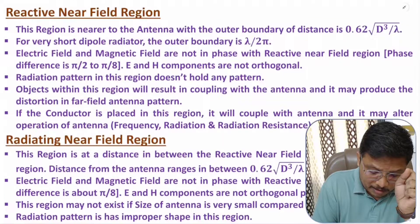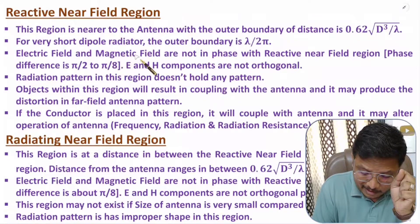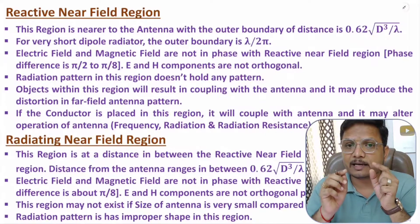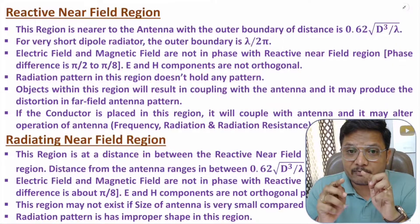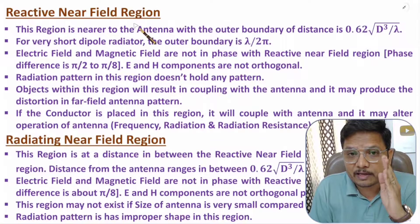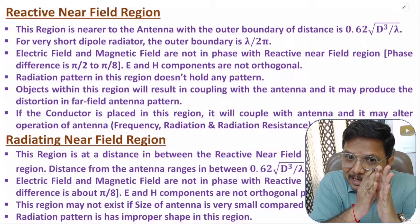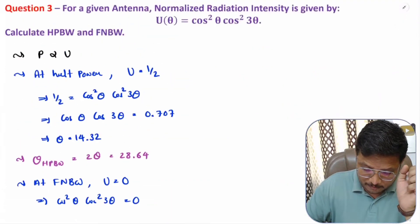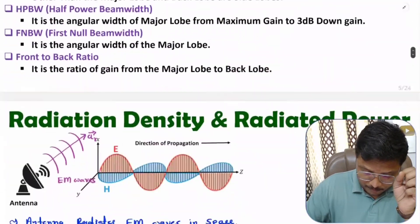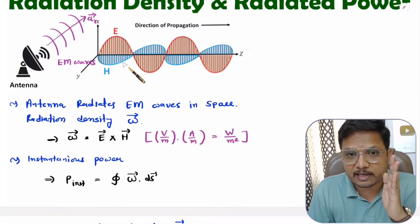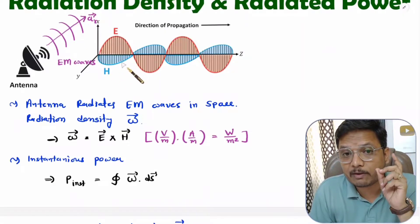In this region, electric field and magnetic field are not in phase. Usually when we transmit EM waves in space, the electric field and magnetic field should be in phase with each other. But in the reactive near field region there will be a phase difference of π/2 exactly at the antenna, and as you move far from the antenna that phase difference will decrease. In far field, E field and H field are in phase and orthogonal to each other, but in the reactive near field region there will be a phase difference of π/2.